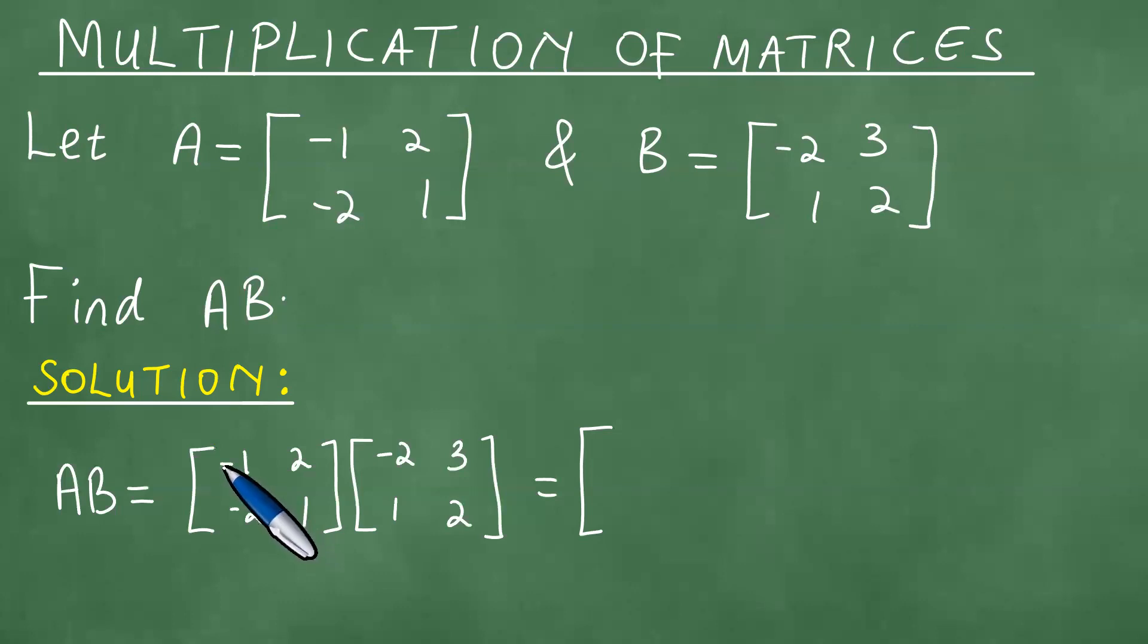If you multiply here, we're doing what we call row by column multiplication. We have -1 times -2, which is exactly 2, plus 2 times 1. In other words, we have 2 plus 2, which gives us 4.